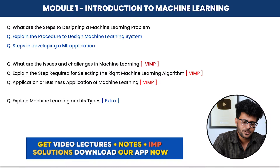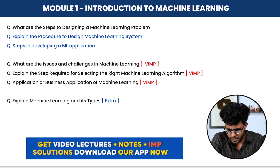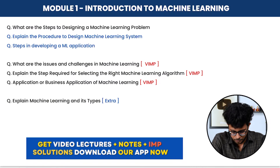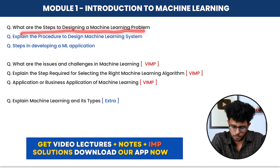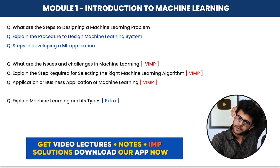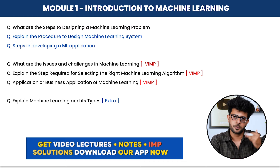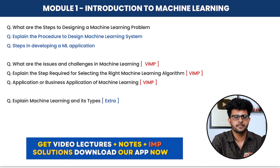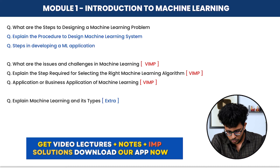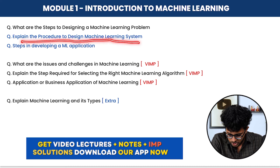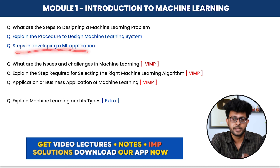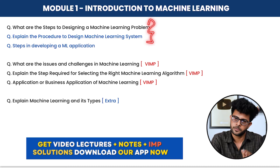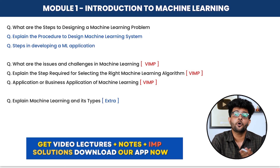Module 1: A common question is — what are the steps to designing a machine learning problem? This question can also be asked as: explain the procedure to design a machine learning system, or steps in developing a machine learning application. One answer covers all these variations. The second very important question is about issues and challenges in machine learning.